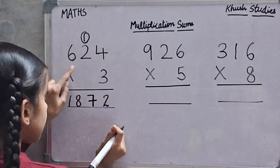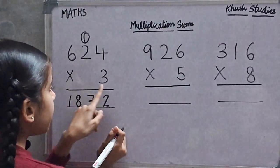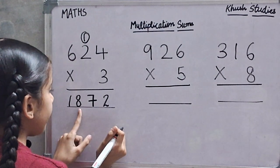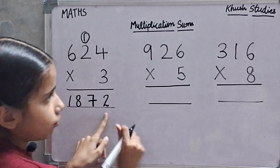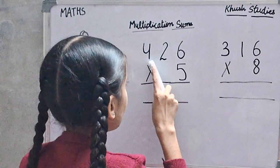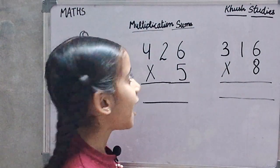So 624 multiply by 3 is 1872. Now we will multiply 426 multiply by 5.